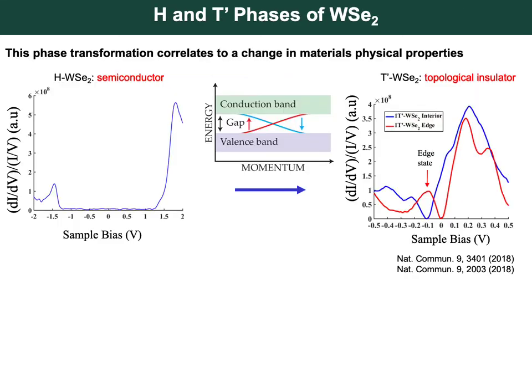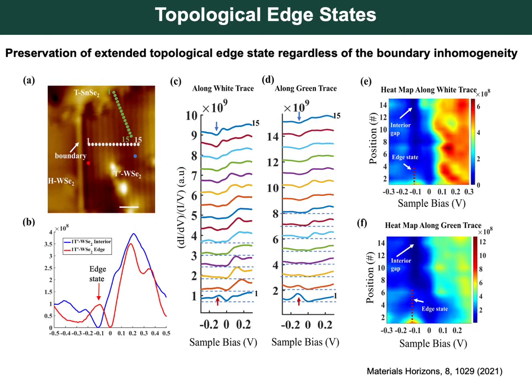When the phase transformation is induced, the electronic structure is also modulated. H-phase WSe2 is a semiconductor with a large band gap visible in STS. For T-prime WSe2, STS taken on the interior of the domain shows a dip in the density of states, and just above this dip a conducting edge state is observed at the boundary between T-prime WSe2 and the trivial semiconductor — either H-phase WSe2 or SnSe2. This dip feature on the interior has been attributed to broadening of the electron lifetime.